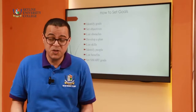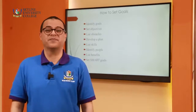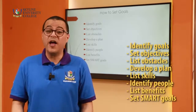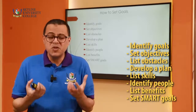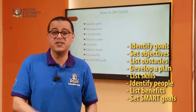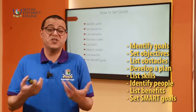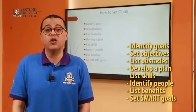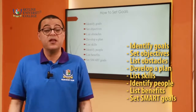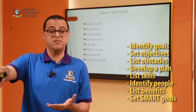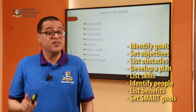After discussing the importance of setting a goal, now we ask ourselves, how do we set a goal? Number one, identify the goal. Set objectives. List the obstacles that may arise while you're progressing. Develop a plan to accomplish the goal. List the skills you have to help you accomplish the goal. Identify the people that might help you. List the benefits — after you finish the goal, what will happen? And finally, set smart goals.